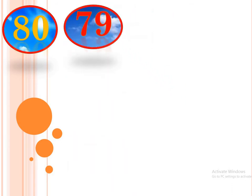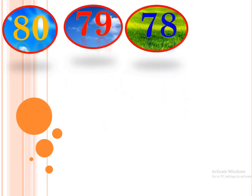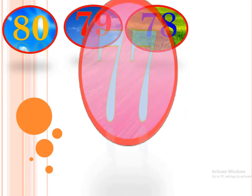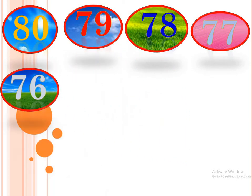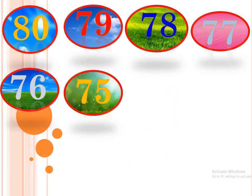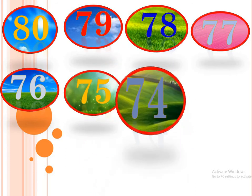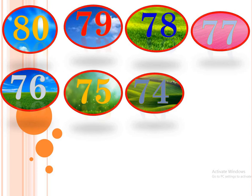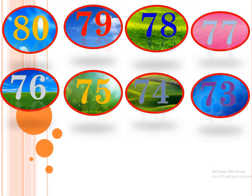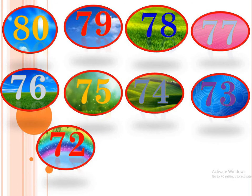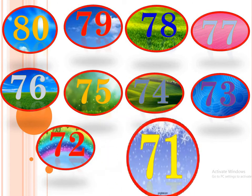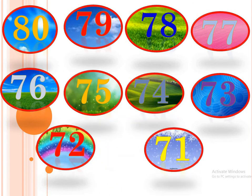Seven nine, seventy-nine. Seven eight, seventy-eight. Seven seven, seventy-seven. Seven six, seventy-six. Seven five, seventy-five. Seven four, seventy-four. Seven three, seventy-three. Seven two, seventy-two. Seven one, seventy-one. Seven zero, seventy.